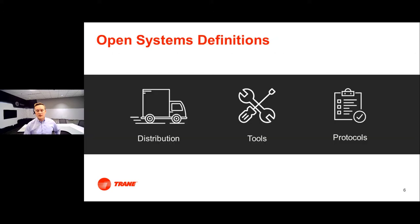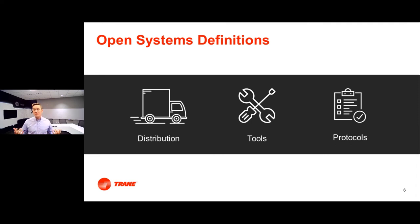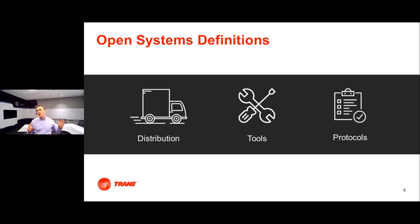The challenge is that open means different things to different people. If you say 'I want an open system' without more information, it can be really challenging to figure out what exactly somebody wants. When we talk to people, we find some common threads and can bucket it into various definitions: open distribution, open tools, and open protocols.